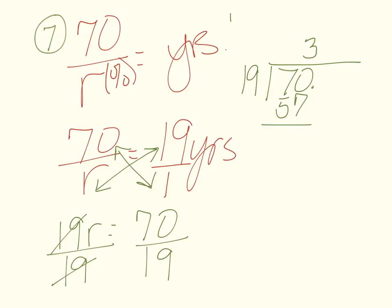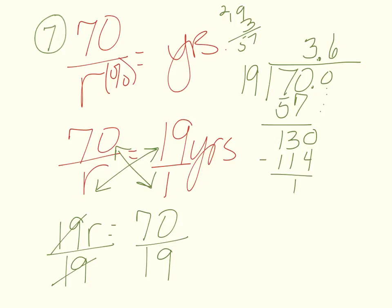You can do scratch math off to the side. Subtract to get 13; add a zero and drop it down to get 130. 19 goes into 130 — here's our decimal — six times. Six times 19 is 114; subtract to get 16. Add a zero and drop it down to get 160.